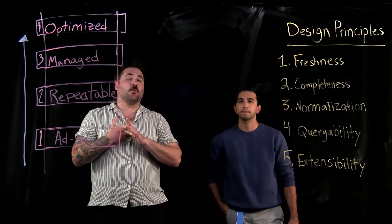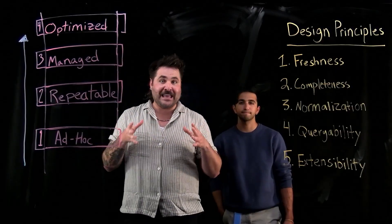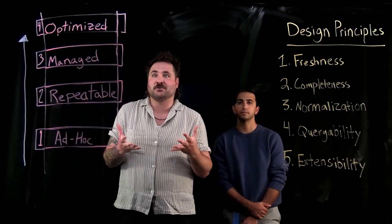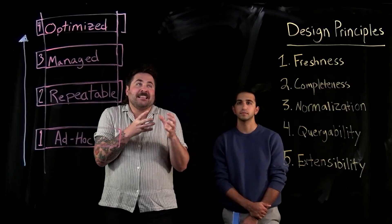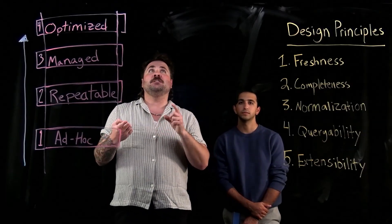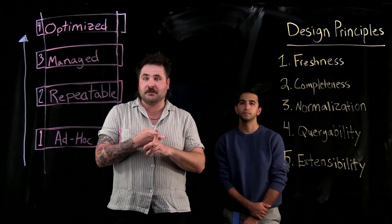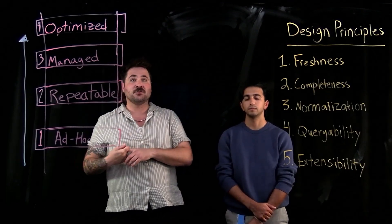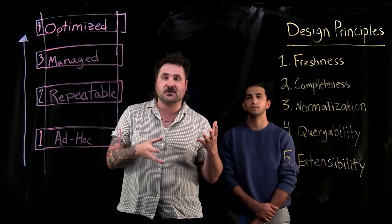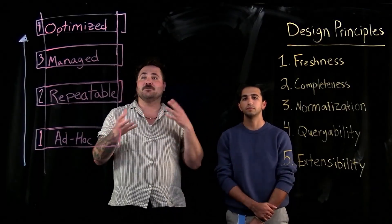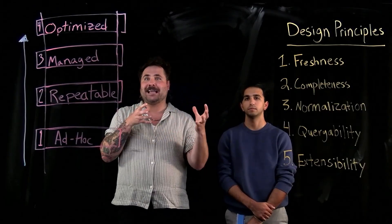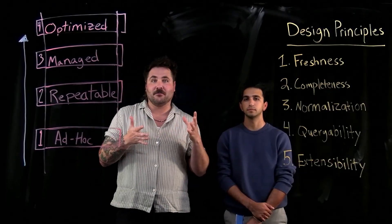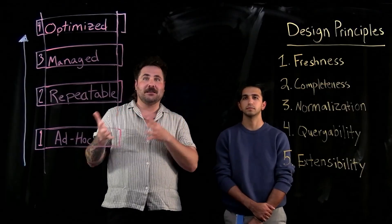That brings us to the fourth principle: queryability. Ask yourself — can our engineering teams, or the people who need to see this data, ask questions about what's going on in our cloud? One of the core things you should be thinking about is developer experience. You need to make sure you're giving your teams the ability to make ad hoc queries and exploration through whatever tools they find most useful. Oftentimes we see that through SQL databases or data warehouses, but they may also need APIs for programmatic access, webhook integration for real-time updates, integration into things like Slack or other alert systems, as well as standardized schemas to build into data pipelines.